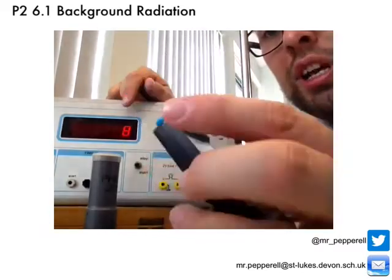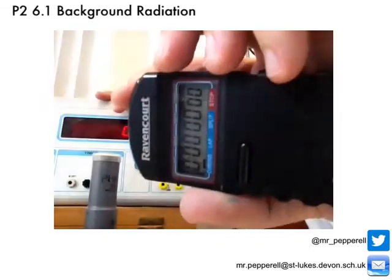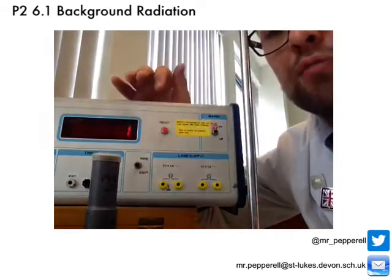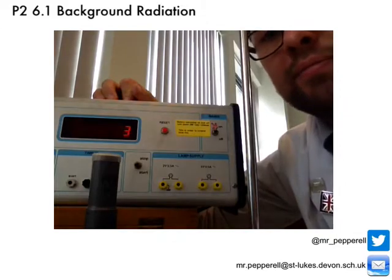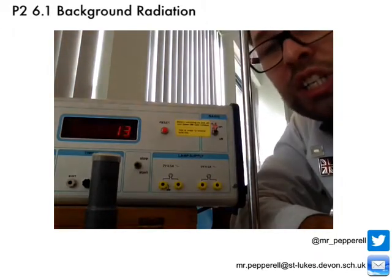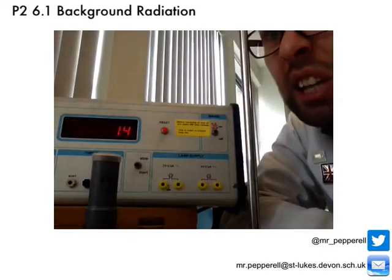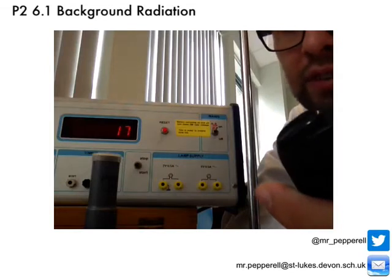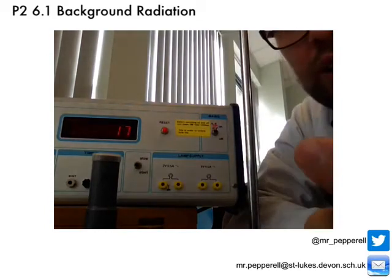I've got my stopwatch here. I'm going to reset this back to zero and start it, and we'll see how many radioactive particles it picks up. We're just coming up to a minute now — you can see on there the counter has ticked up quite a long way. It's up on 17. That's 58, 59, and in one minute I counted 17 radioactive particles in my room. So I've got a count rate of 17 counts per minute as my background radiation.